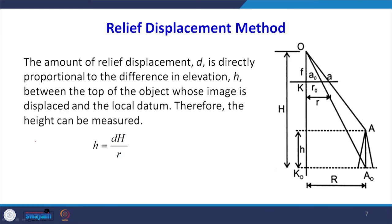The second method is the relief displacement method. Every taller object has a certain relief displacement because we can see the top and bottom of the tower. Using the relationship h = (d·H) / r, where d is the displacement distance, r is the radial distance, and H is the flying height, we can determine the height using a single photograph.